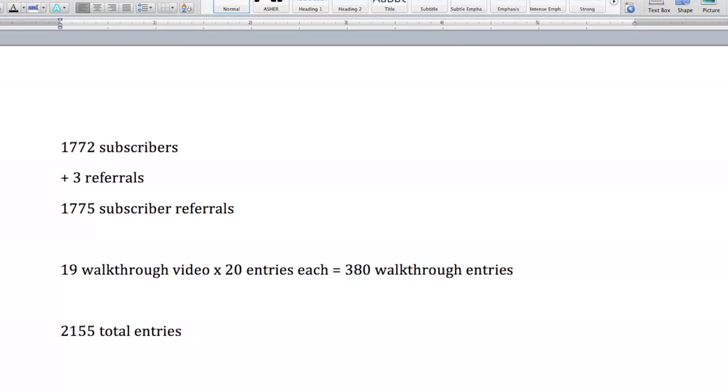the walkthrough ones will be easier to figure out than the 1,775 subscribers. Because I just found out that YouTube can't export a subscriber list. And so that makes this complicated. I'll figure it out if I need to. But the first thing I'm going to do is figure out if the winner is going to be a subscriber or from a walkthrough entry.